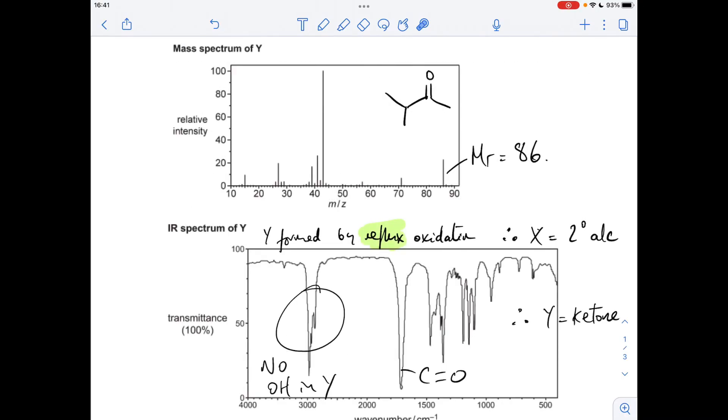So we'll go back to the mass spectrum. Let's try and allocate this fragment peak here. It's got an M over Z value of 43. So how can we get 43? We can break that bond there. So that fragment peak at 43 could be due to CH3 twice CH plus. Whatever you do, don't forget that positive charge. Or if this bit carries the positive charge, CH3 CO plus. It's also got an M over Z of 43.